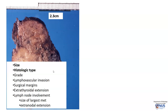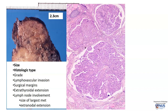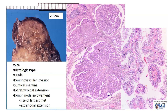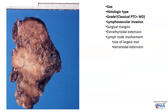The next thing we want to look at is histologic type, and we can clearly see that this is a classical papillary thyroid carcinoma with very well-formed papillary structures and the very classical nuclear features. So tumor type is classical PTC. We don't actually need to grade this separately because classical PTC is, by definition, well-differentiated thyroid carcinoma.